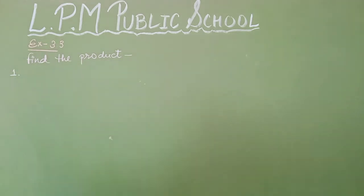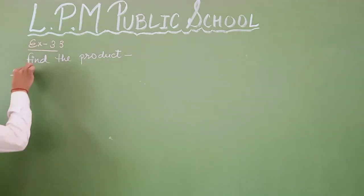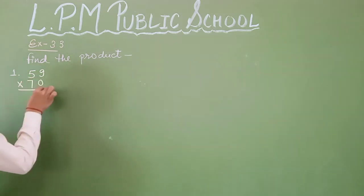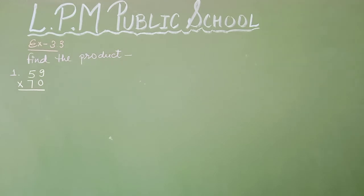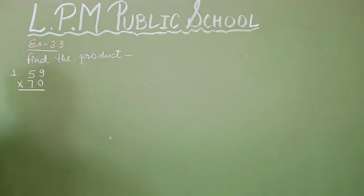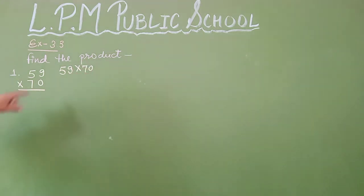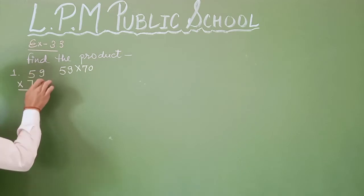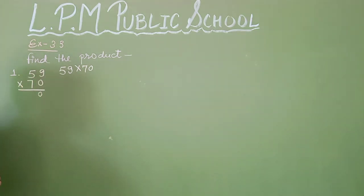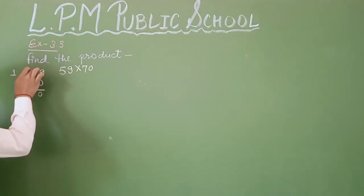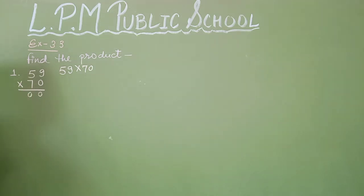59 × 70. Firstly we know that we have to multiply the numbers. We write it as 59 × 70. Now multiply by 1s: 0 × 9 = 0 ones. Because when 0 is multiplied by any number, the product is 0. And 0 × 5 is also 0.